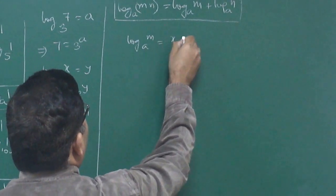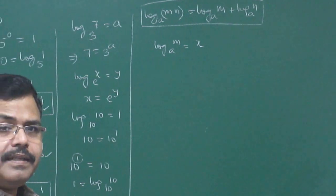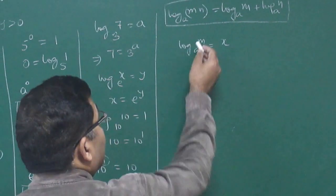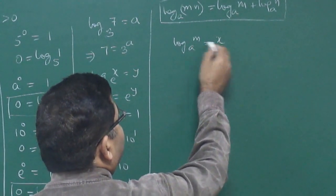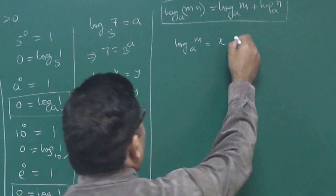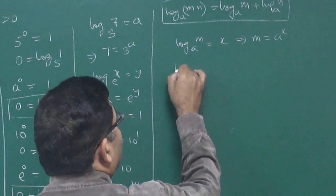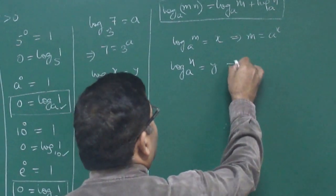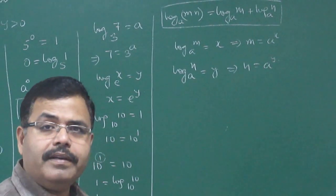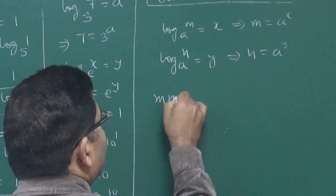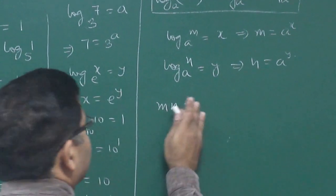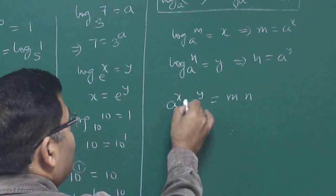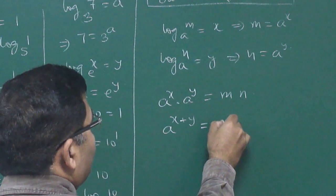Proof: Let log of m to the base a equal x, so m equals a to the power x. Let log of n to the base a equal y, so n equals a to the power y. Now m into n equals a to the power x times a to the power y, which equals a to the power (x + y). So a to the power (x + y) is equal to m·n.